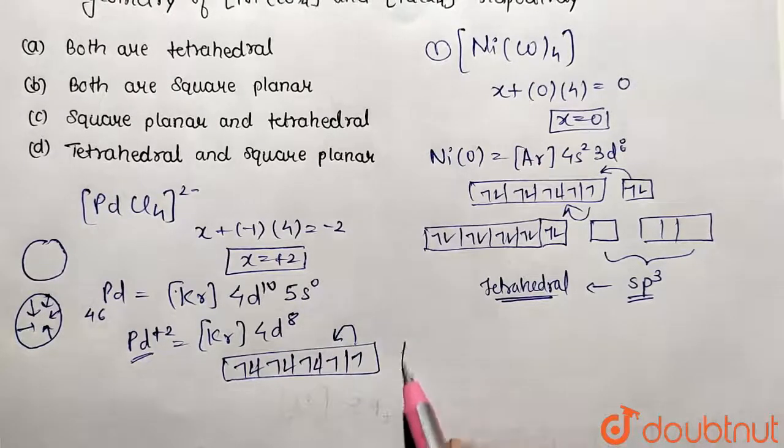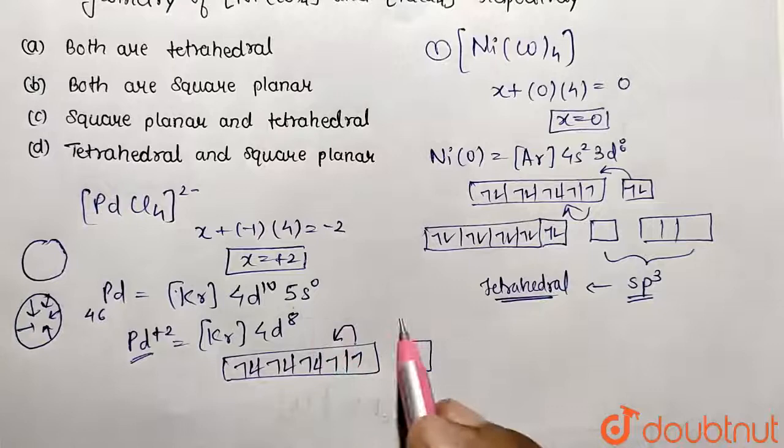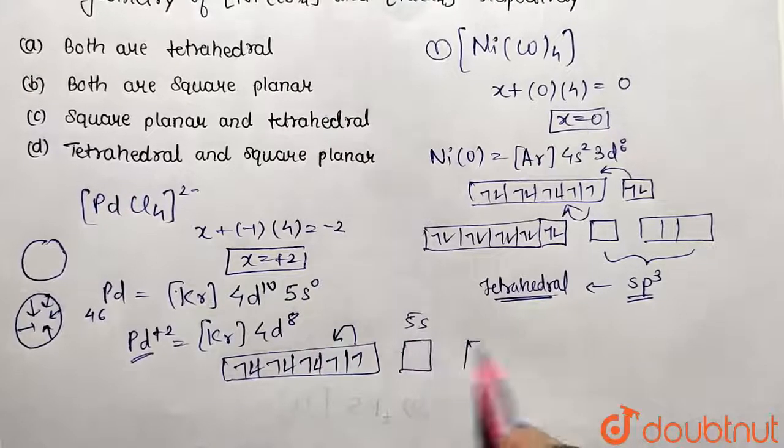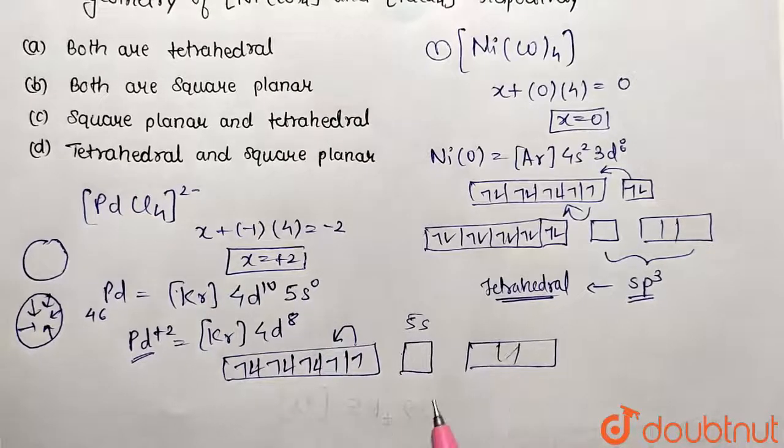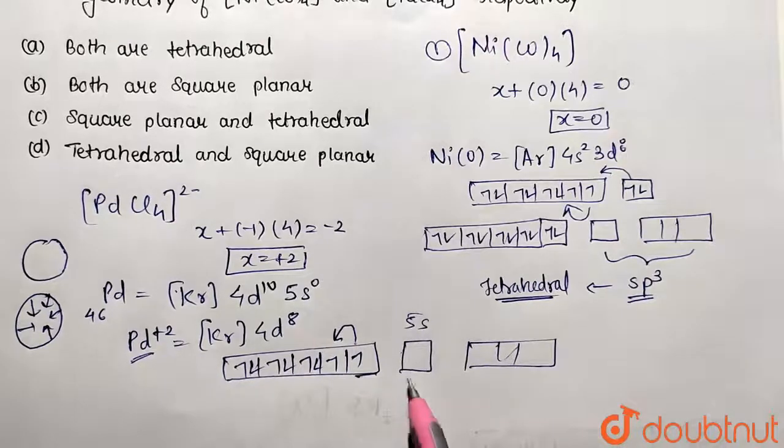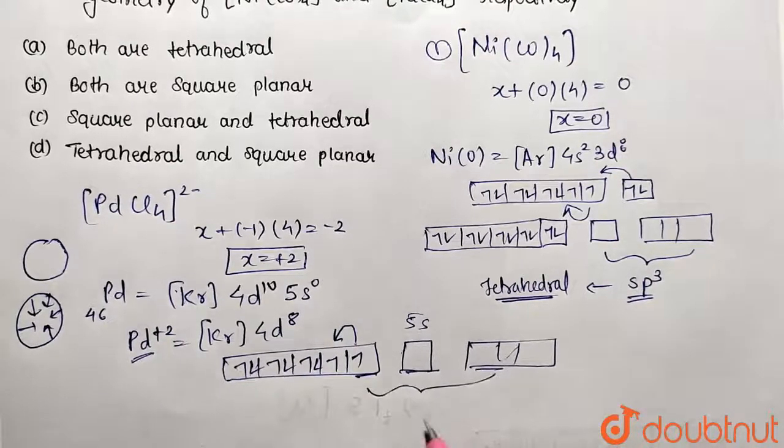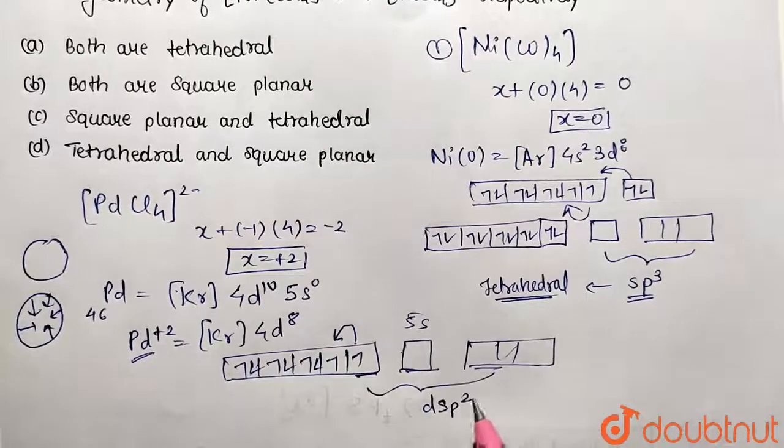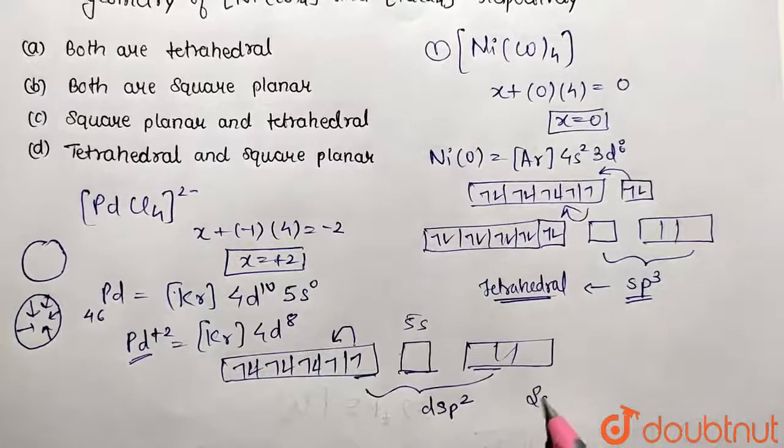With the appropriate vacant orbitals—5s and 5p already vacant—it undergoes dsp² hybridization, which results in square planar geometry.